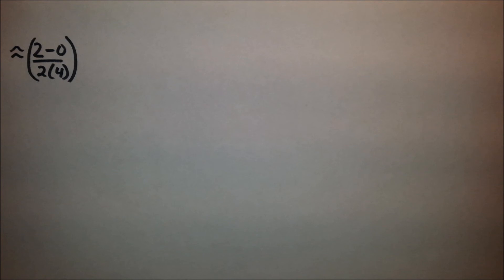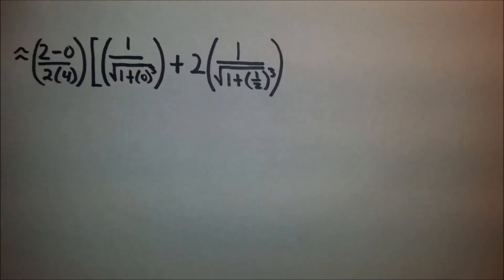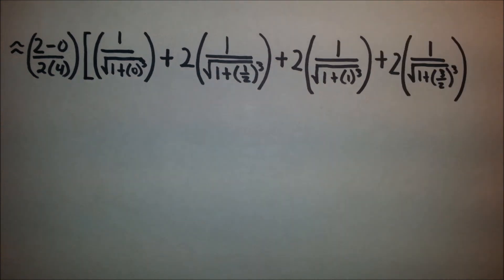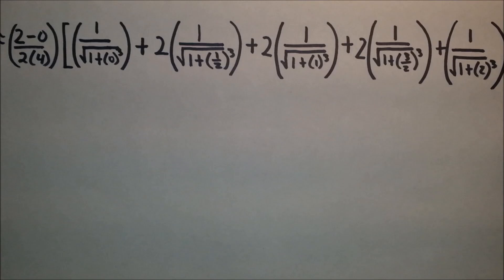Then we can begin our problem. So we begin with (b-a)/2n, which is (2-0)/(2×4), times 1 over the square root of 1 plus 0 cubed, which is our x₀. Then we plug in our x₁, which is 2, and then 1 over the square root of 1 plus (1/2) cubed, plus our x₂, plus our x₃, and finally our xₙ.